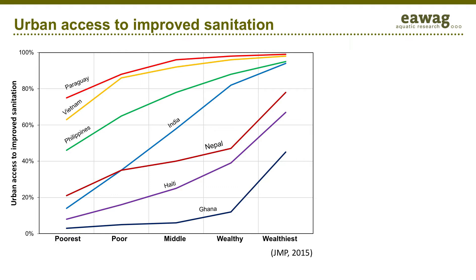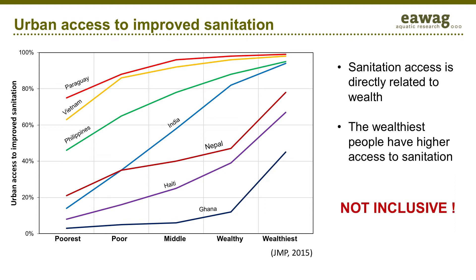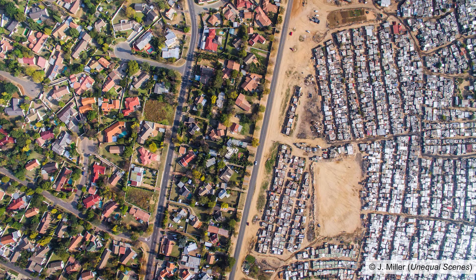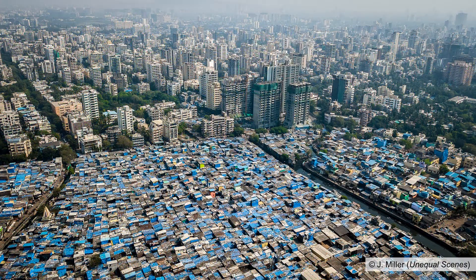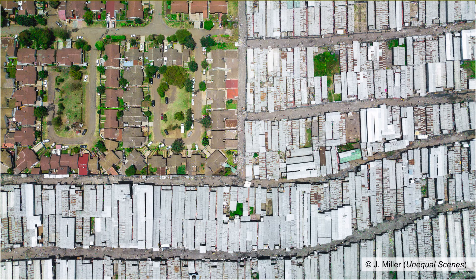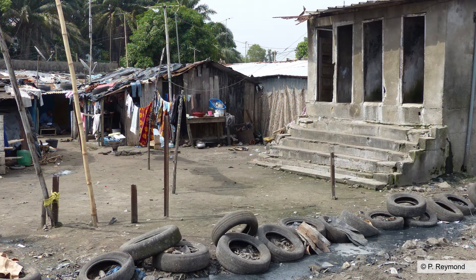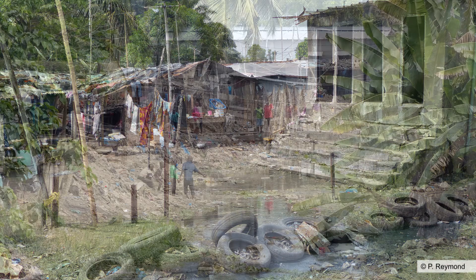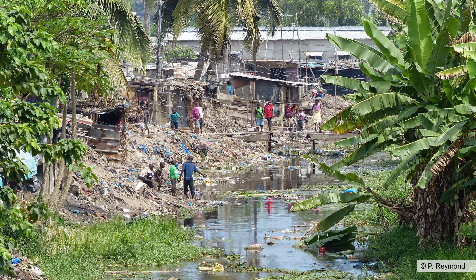On this graph, we can clearly see that urban access to improved sanitation is not inclusive. Sanitation access is directly related to wealth, and the wealthiest people have higher access to sanitation. This is not new, but let's remember that access to water and sanitation is a basic human right. Unfortunately, most of the urban growth happens in the form of informal settlements. Providing basic services in such areas is definitely a challenge, but it should be taken up. It's a matter of governance and equity.